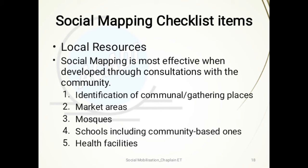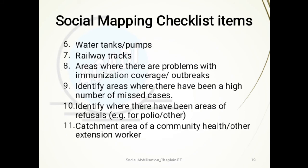Note any community activities or volunteers and local resources. Social mapping is most effective when developed through consultation with the community. This includes identification of communal gathering places, market areas, schools including community-based ones, health facilities, water tanks and pumps, and railway tracks. Identify areas where there are problems with immunization coverage, where there have been a high number of missed cases, areas of refusers, and the catchment area of community health extension workers.